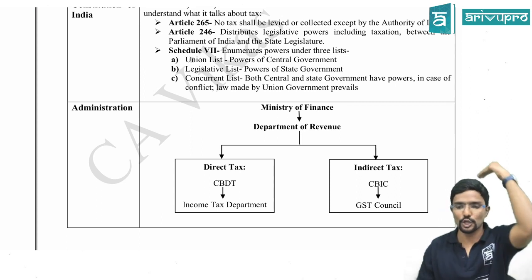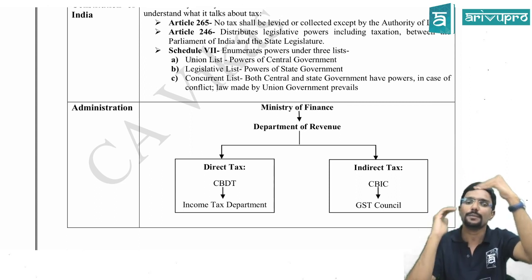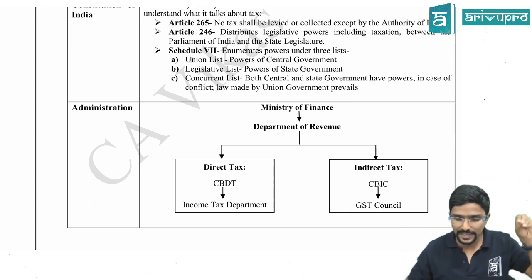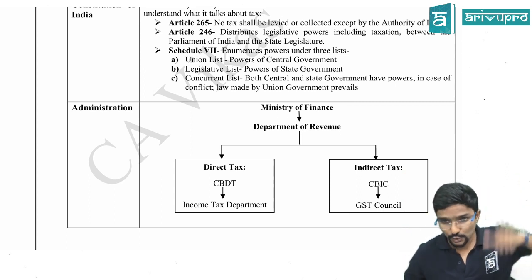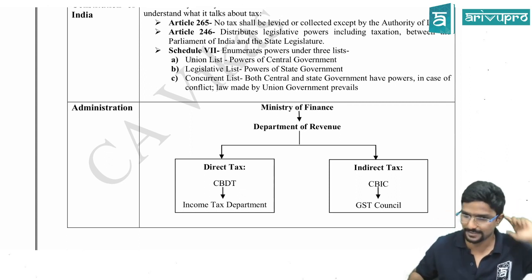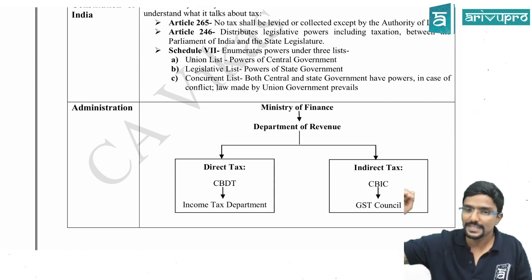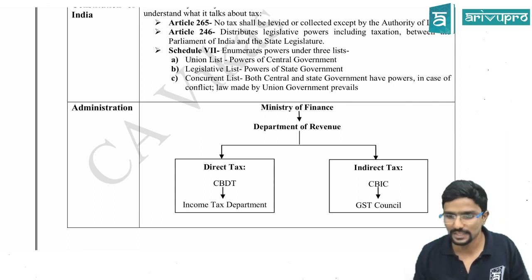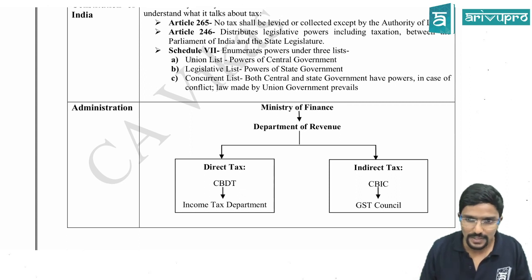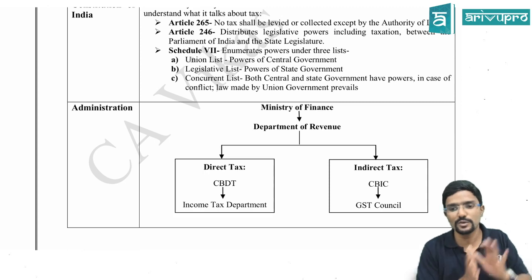For administration, the topmost authority is the Minister of Finance. Under that, for revenue, there is the Department of Revenue. Under the Department of Revenue there are two wings: for direct taxes there is CBDT, and under CBDT is the Income Tax Department — these handle everything related to direct taxes. The second wing is for indirect taxes: CBIC, and under CBIC is the GST Council. CBIC also handles customs, but the GST Council is concerned only with GST.